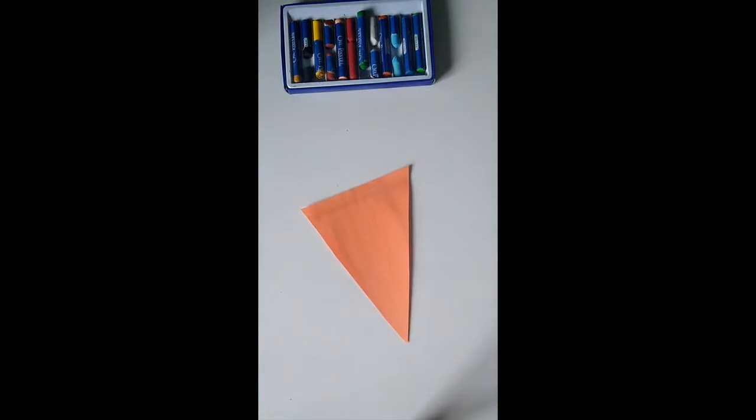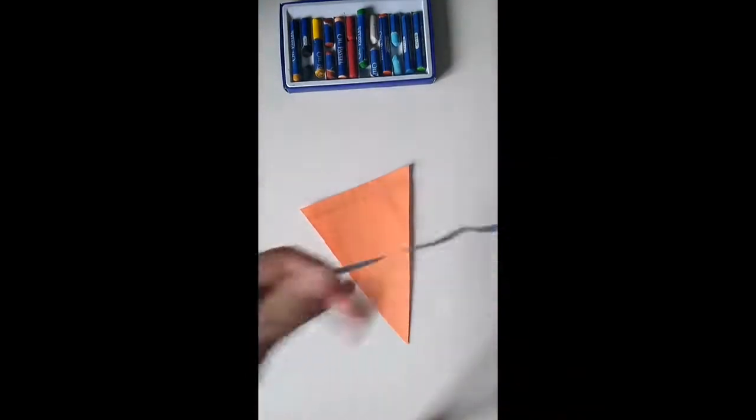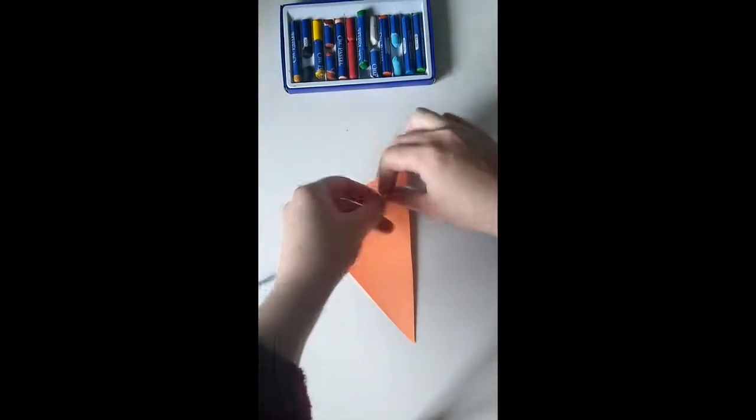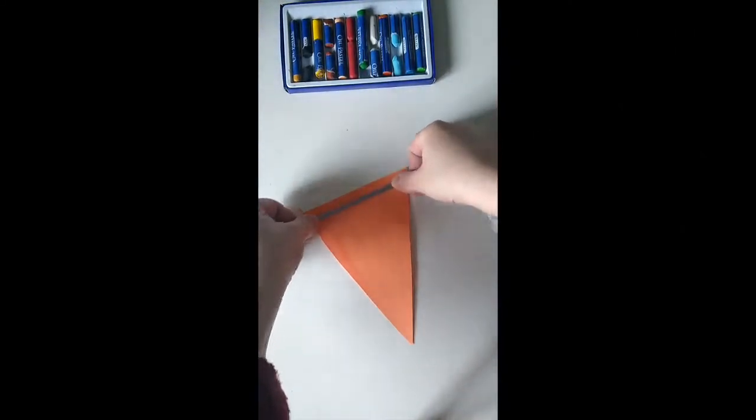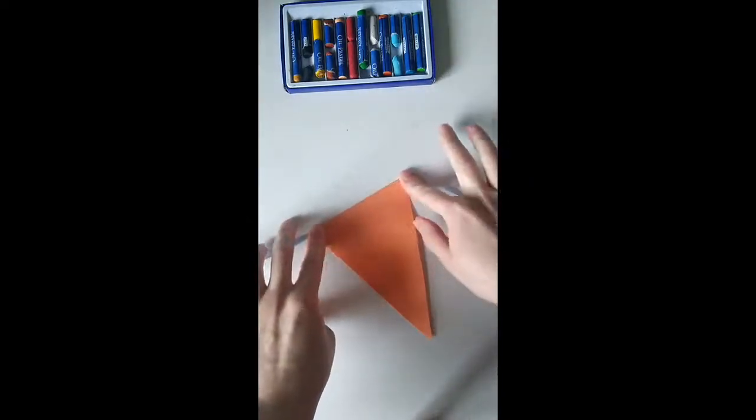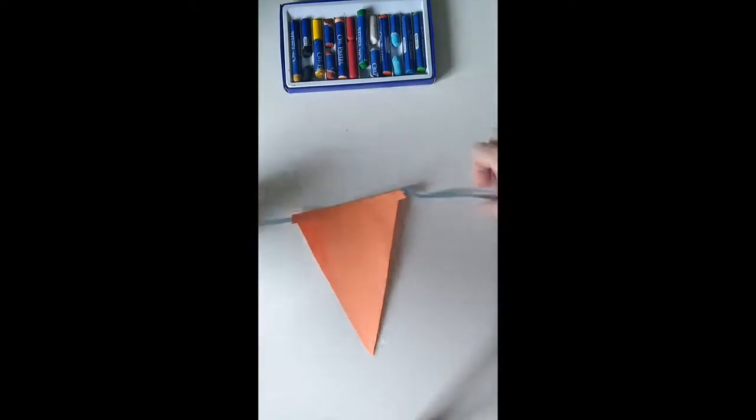I'm going to put glue stick over here, and then we're going to use our string. And so you're going to put it like this, mine is a little curly, so it's going to be a little harder. So you're going to put it like this, fold it over, so it's going to stay inside your little triangle.